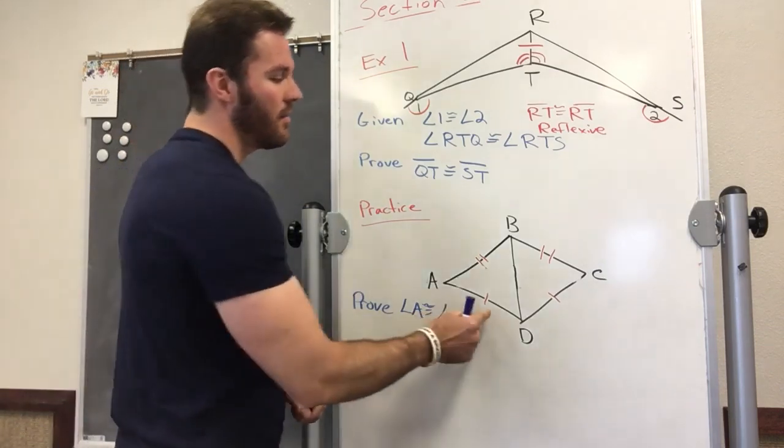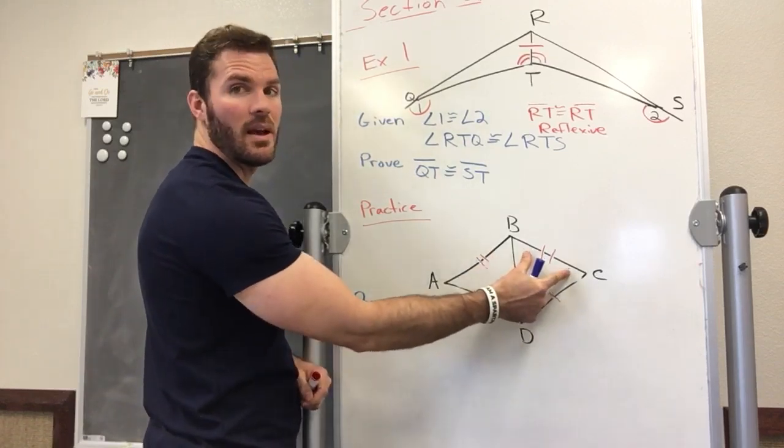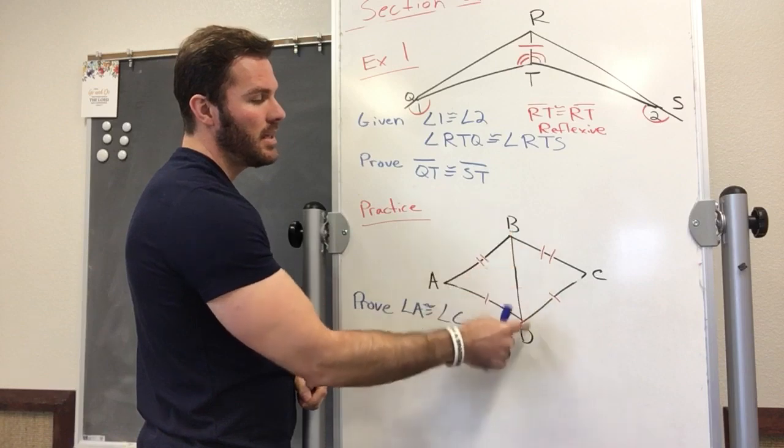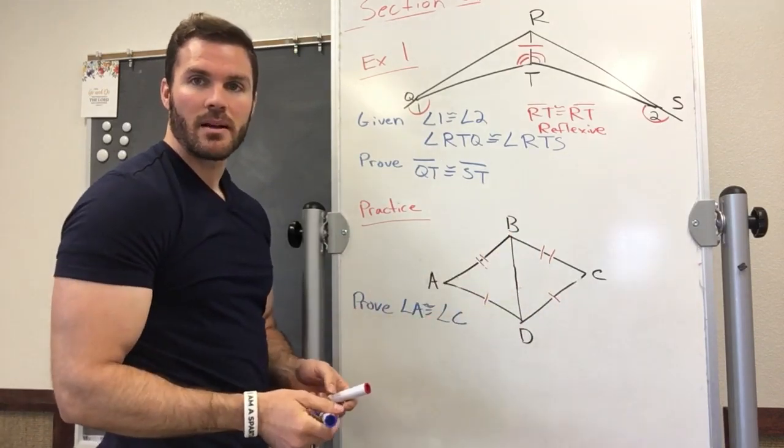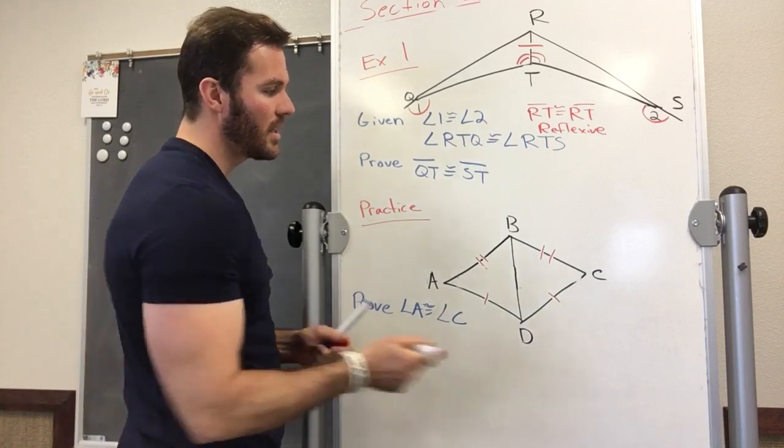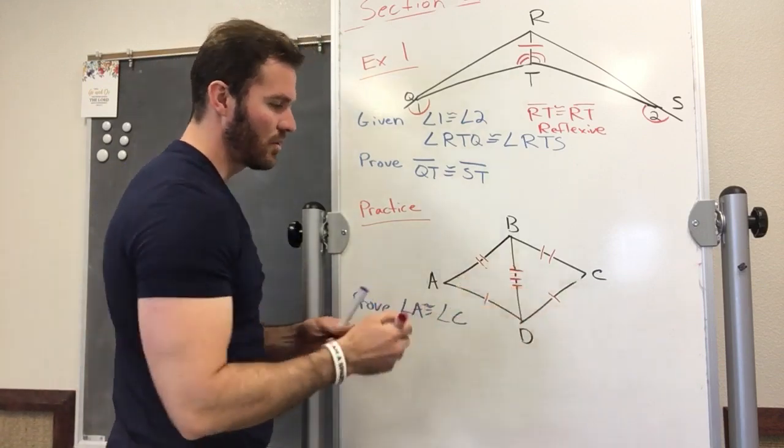We have that AD is congruent with CD, AB is congruent with CB, and BD is connected. It's being shared by both triangles, so we can say that BD is congruent to itself.